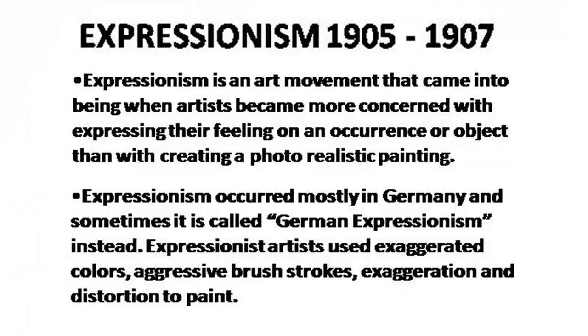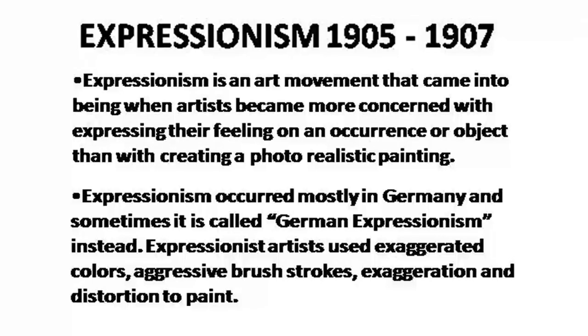Expressionism can be defined as an art movement that came into being when artists became more concerned with expressing their feelings on an occurrence or object than with creating a photo-realistic painting. But Expressionism as a movement occurred mostly in Germany — sometimes it is called German Expressionism — because it has a very specific socio-political context, a kind of political anxiety that started brewing before the First World War.